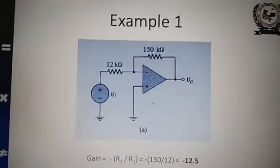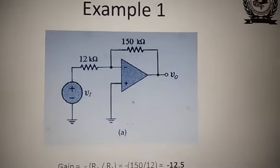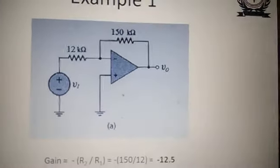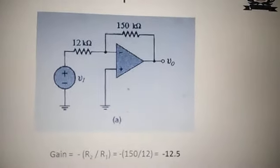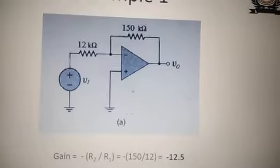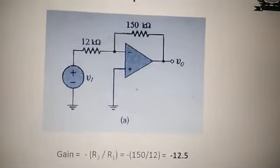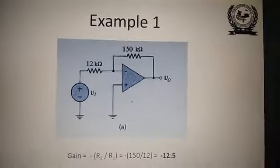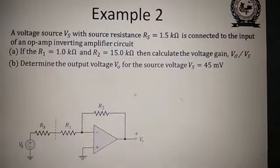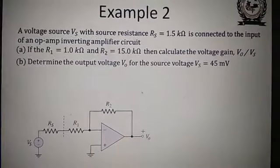Here is an example: with 150 kΩ feedback resistance and 12 kΩ input resistance, the gain will be equal to minus 150/12, that is minus 12.5. The minus sign is due to the inverting configuration.